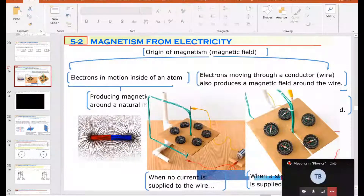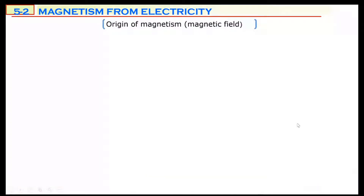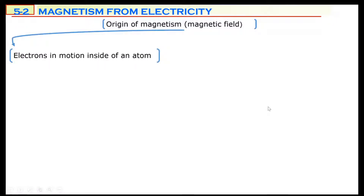We know that the origin of the magnetic field is the charges which are in motion inside an atom. Inside the atom, electrons are in motion. These moving electrons produce a magnetic field, and most atoms gain a magnetic field. They behave just like a tiny magnet. When these atoms come together, atoms whose magnetic fields are in the same direction form domains.